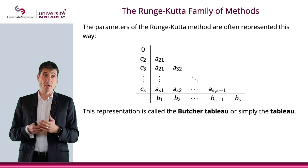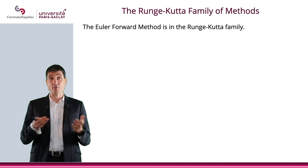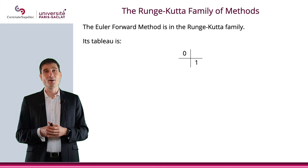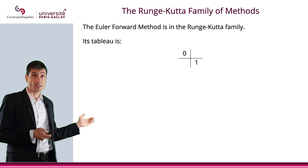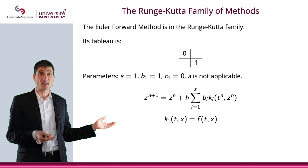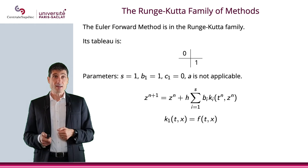This is a representation of all the parameters for the Runge-Kutta family of methods. We have one that we've already discussed—the Euler forward method. It is part of the Runge-Kutta family. Here is the tableau of that Euler forward method. Obviously, the reason is because s = 1, b₁ = 1, c₁ = 0, and A is not applicable in this case because you just have k₁(t,x) which is f(t,x).